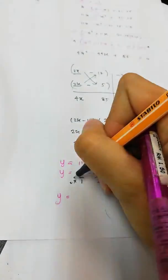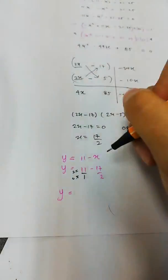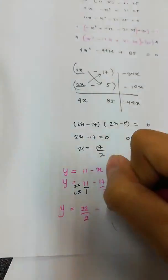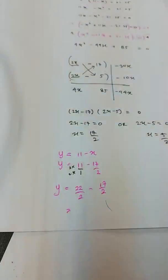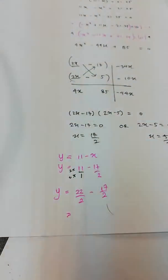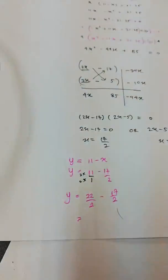Make denominator the same. So we're going to get 22 over 2 minus 17 over 2. So you will get 22 minus 17, 5.